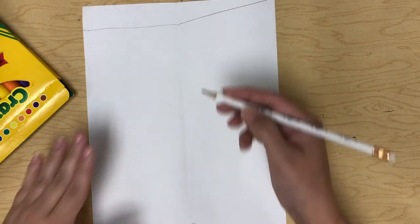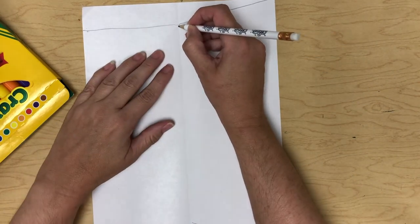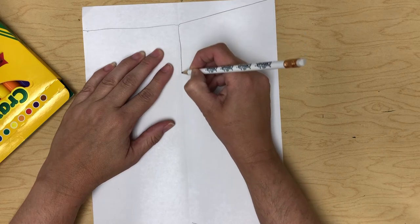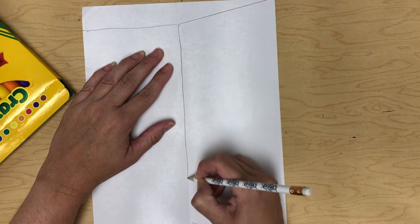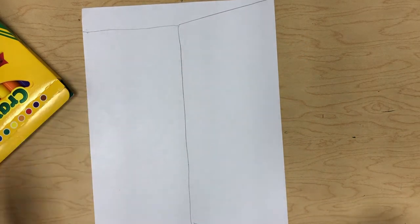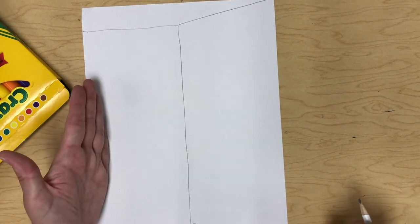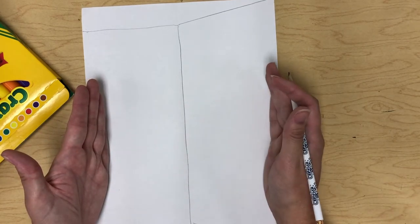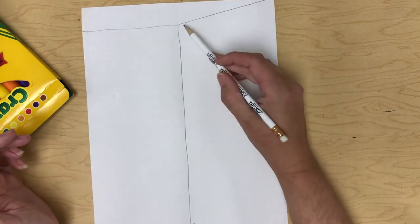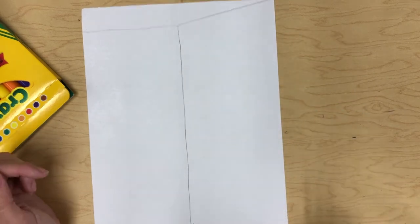Right here in the middle I'm going to draw a straight line that comes down and it stops right about there. This will be the inside of your locker and this will be the door that's open. We drew it on an angle so it looks like it's open in front of us.